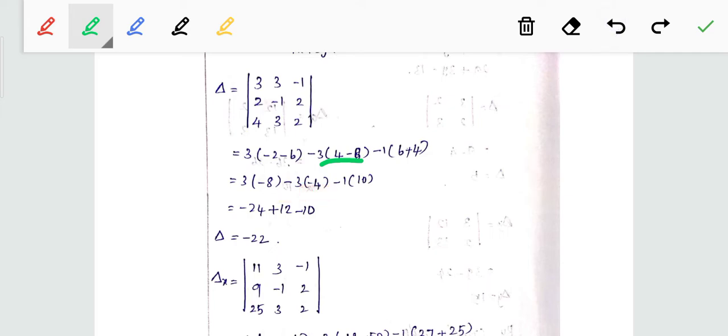So 24, 10, minus value minus 1, minus 34 plus 2, minus 22. So del equals minus 22.